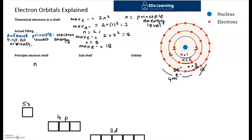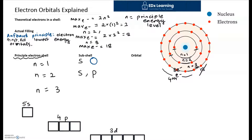n refers to the principal electron shell. Even within one principal energy level, we have subshells. In the first energy level, we have an S subshell, which has a circular shape. When n equals 2, we have an S subshell but also one more subshell added — the P subshell — which has almost an infinity sign shape and can also be oriented vertically in space.